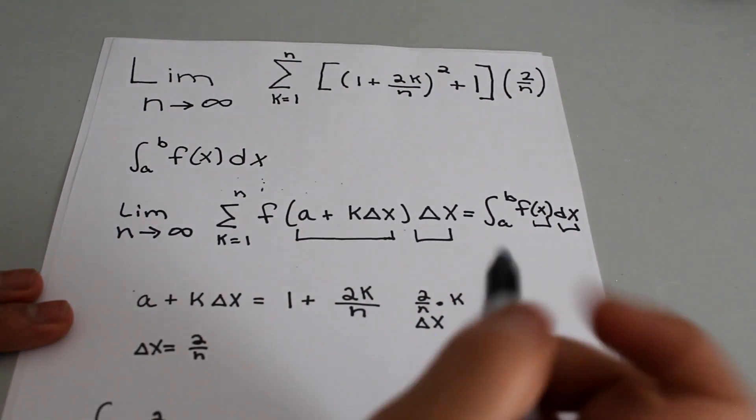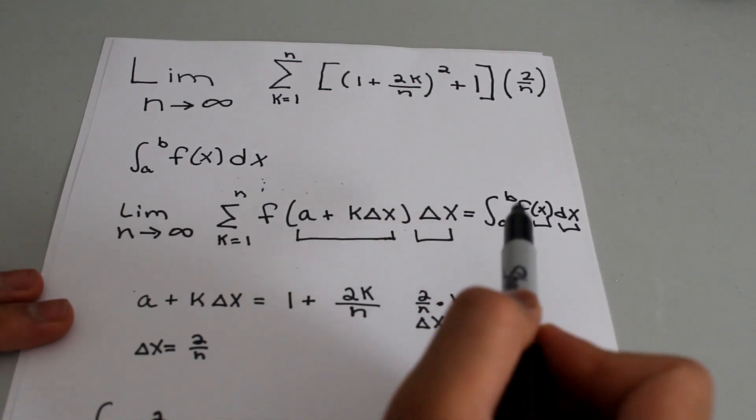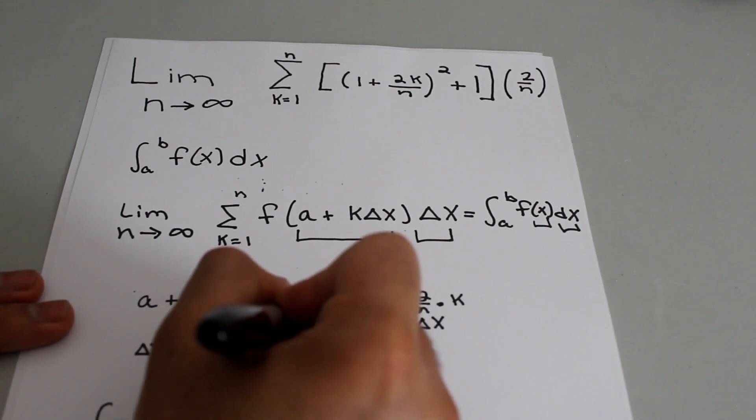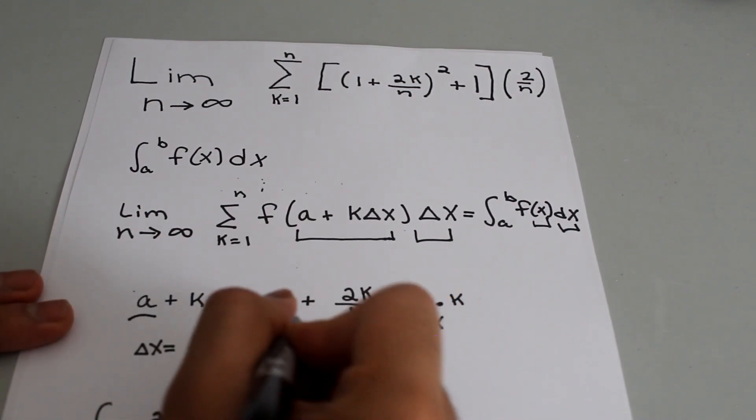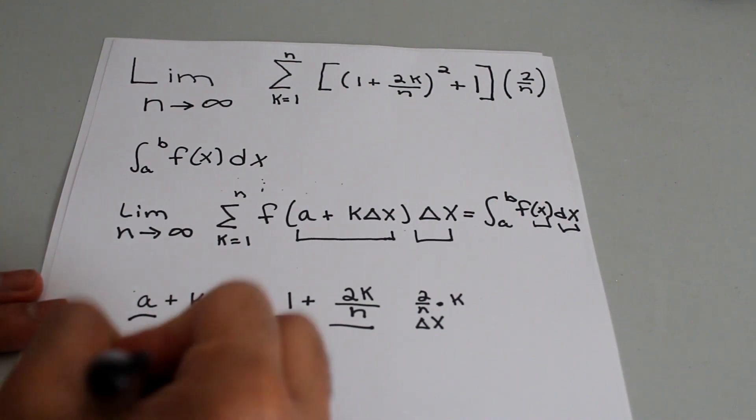Now if you look over here, the integral starts from a and our a value here, if this is k delta x, our a value is equal to 1. So the integral starts from 1 to b.